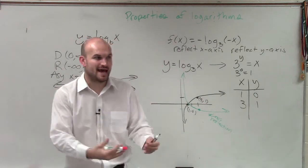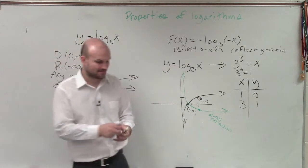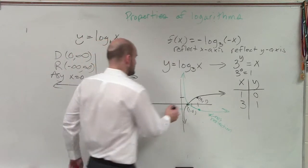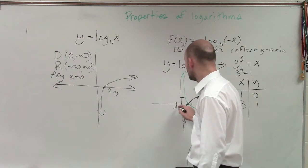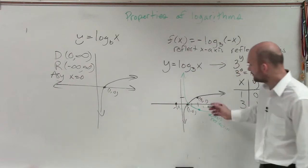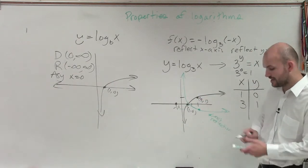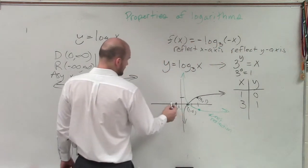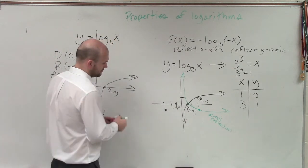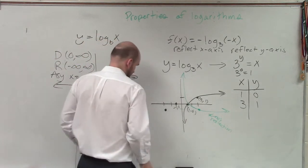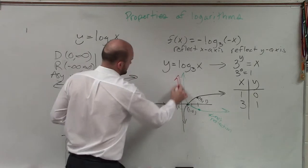Then you take that and you reflect it over the y-axis. So now if this is at 1 comma 0, the reflection over the y-axis of the green is now going to be negative 1 comma 0. And then if you take the reflection of 3 comma negative 1, you're now going to have negative 3 comma negative 1.